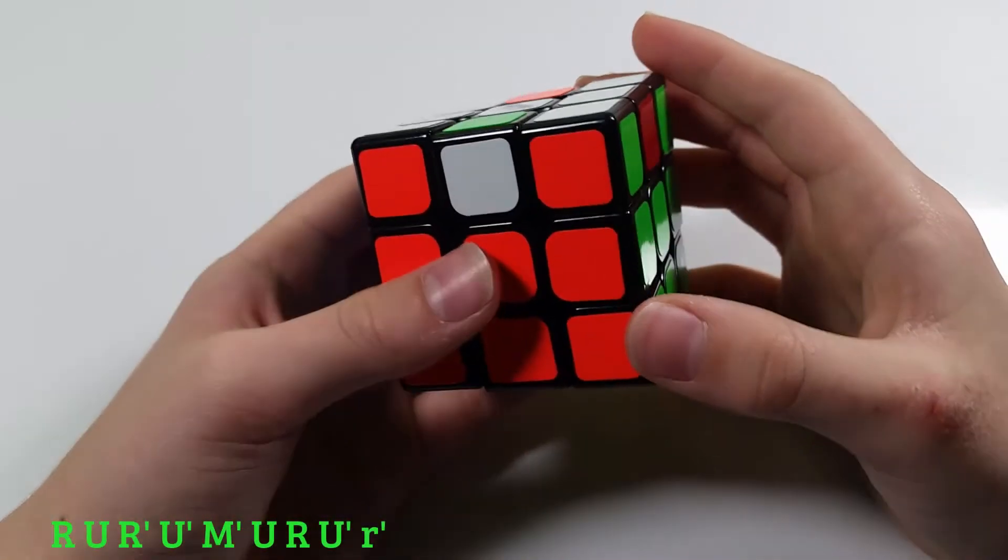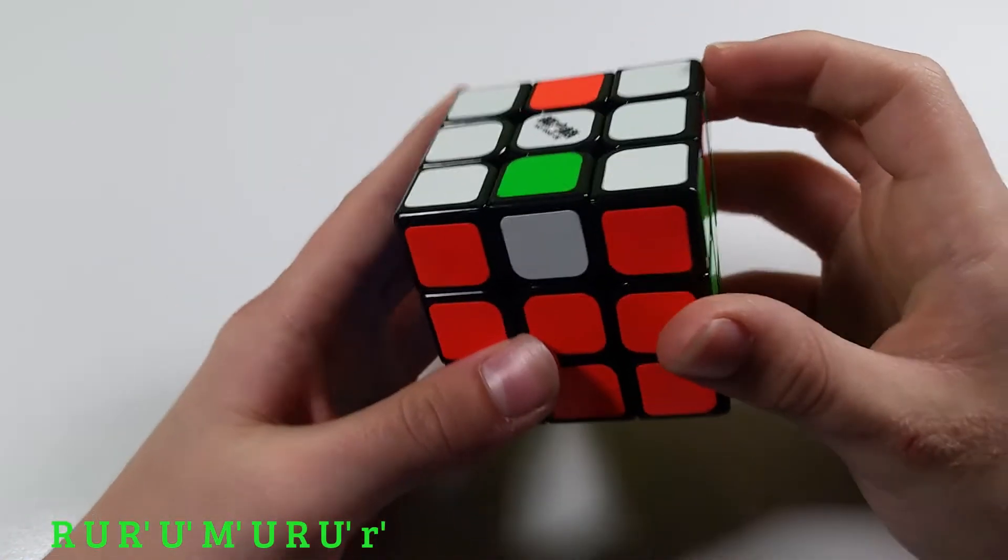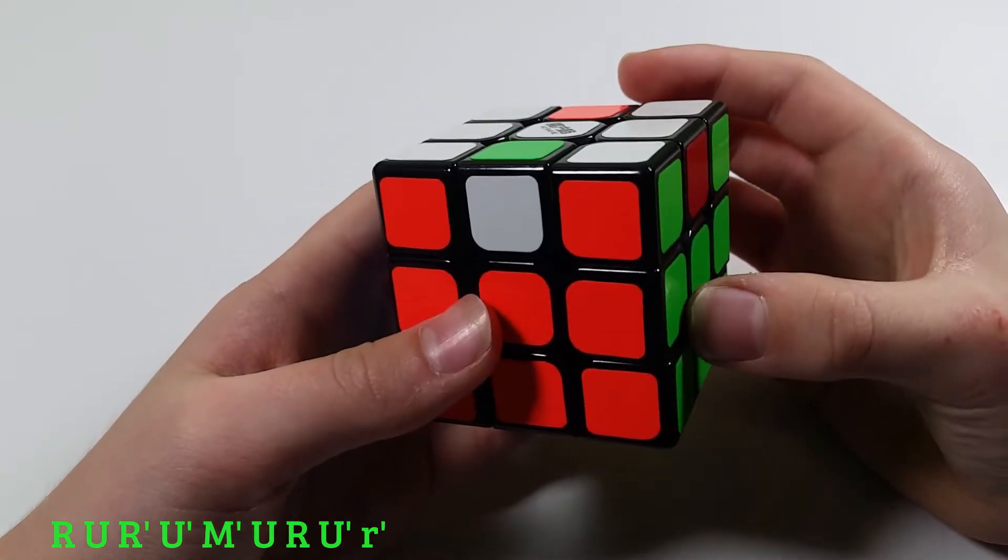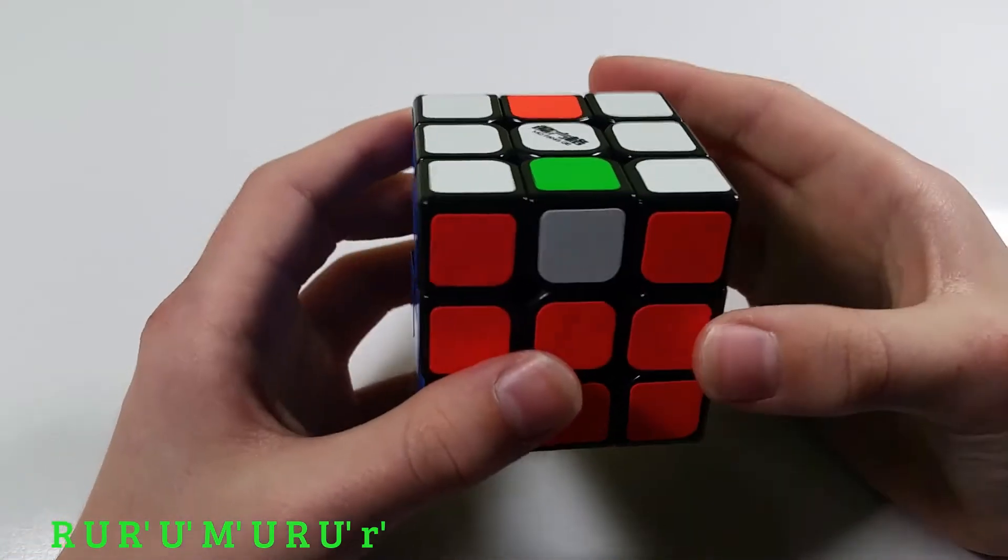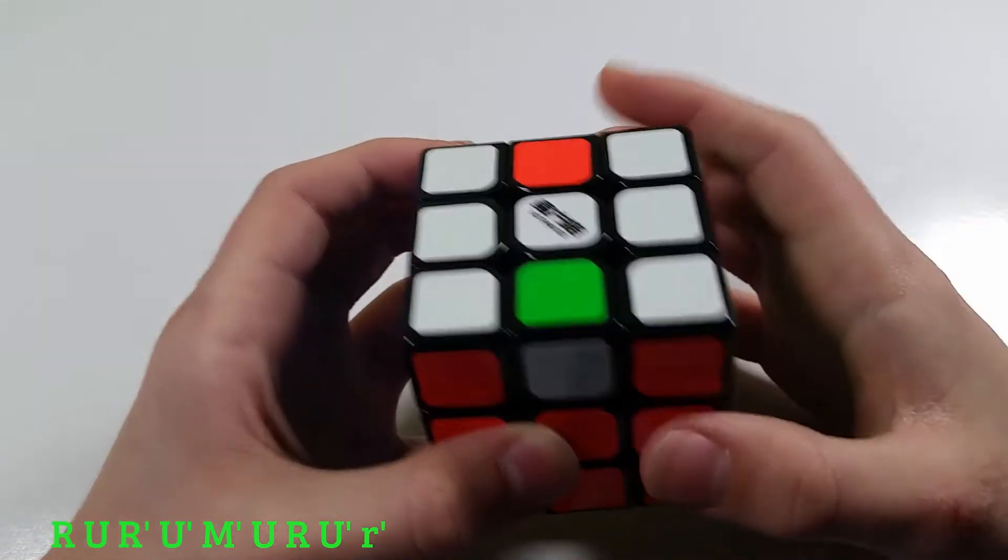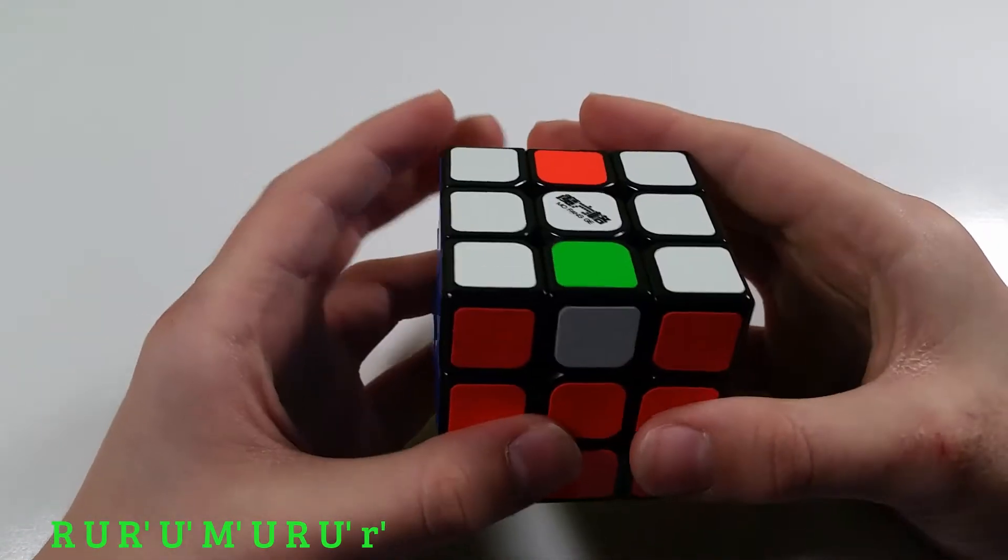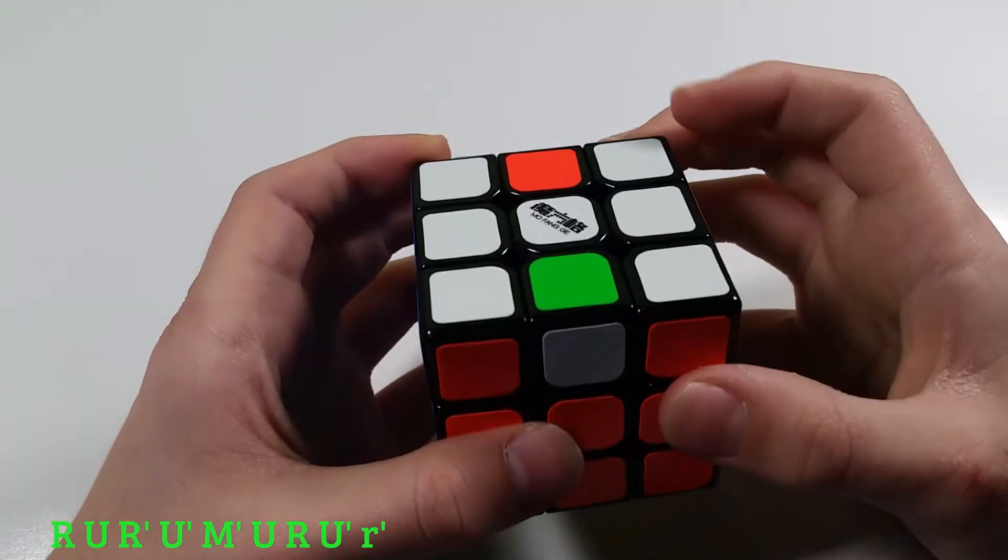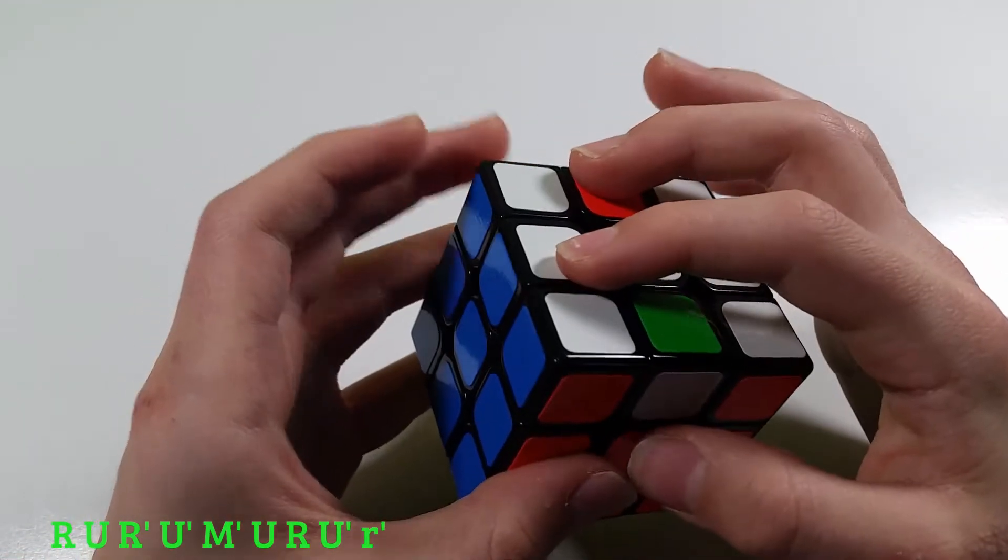So now here is the second case. This is one of my favorite OLLs because it's super easy to memorize and is really fast. So you can recognize it just by seeing that you have an H here. And the only difference from this case that is different from the last case is instead of having two adjacent edges oriented, now you have two opposite edges oriented.